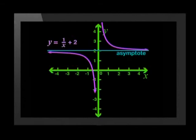If I change q to 2, I get this graph. The formula is y equals 1 over x plus 2. The whole parent graph has shifted up by two units. Again, the asymptote moves up by two units, but the asymptote on the y-axis remains the same.